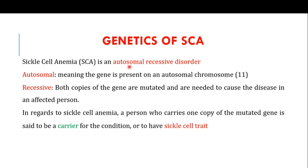Sickle cell anemia is an example of an autosomal recessive disorder. The term autosomal means the gene is present on an autosomal chromosome. Human chromosomes are classified into autosomes (pairs 1 to 22) and sex chromosomes (pair 23). In sickle cell anemia, the HBB gene is present on chromosome number 11, therefore it is autosomal in nature.